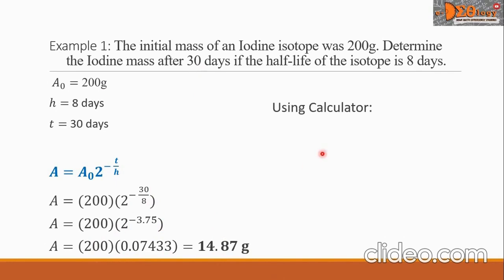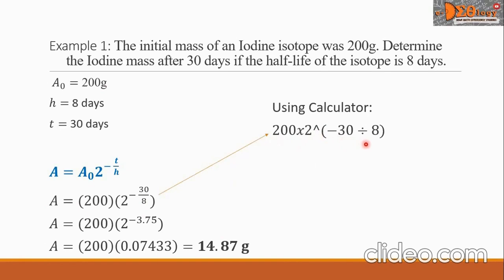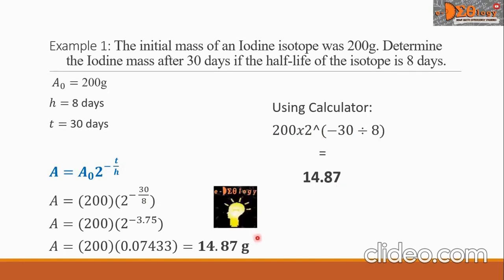For a quick computation using a calculator, from this equation we input: 200 times 2, then the raise-to symbol, open parenthesis, negative 30 divided by 8, close parenthesis. Hit the equal sign and the answer is 14.87. This is our final answer.